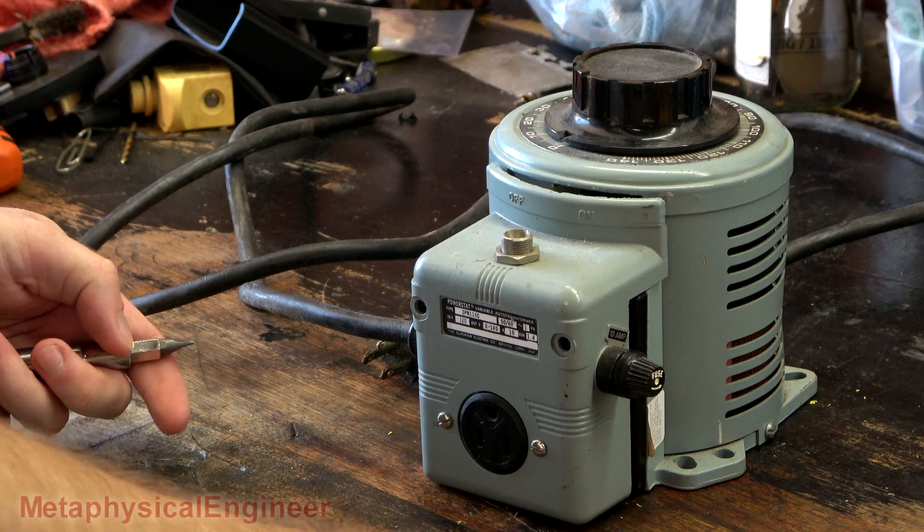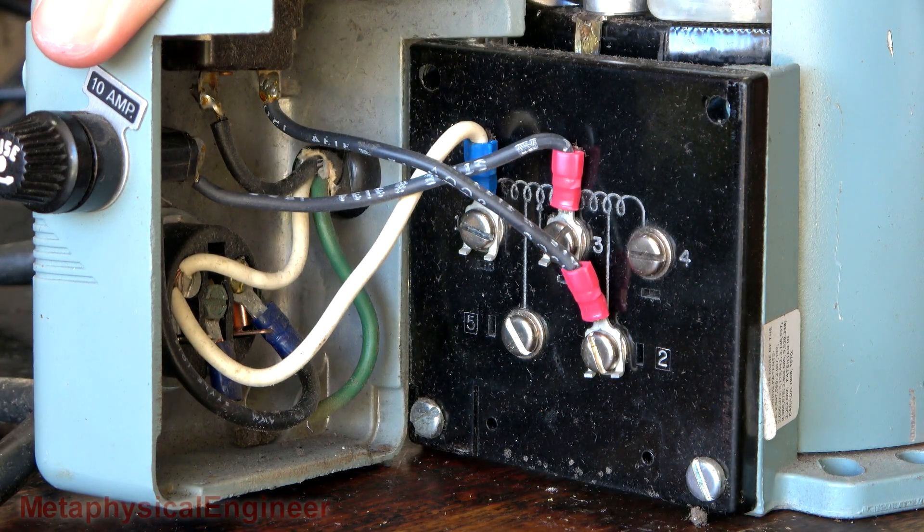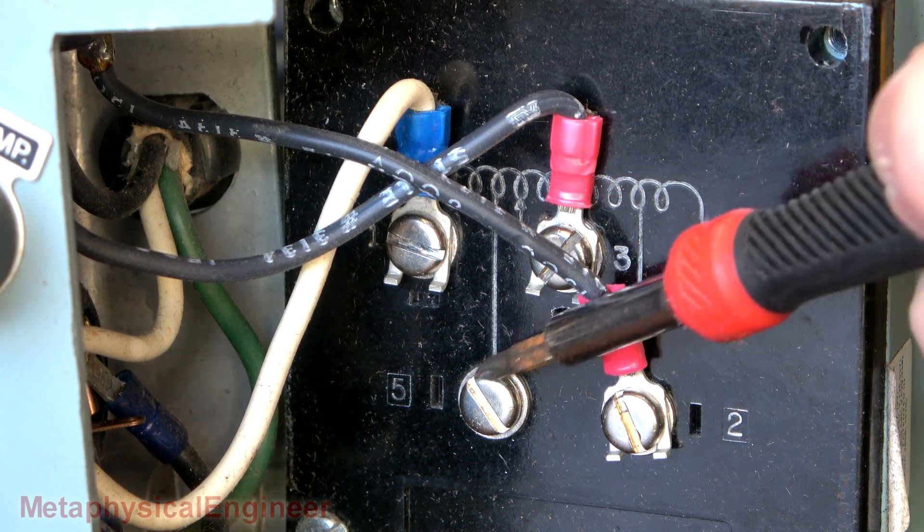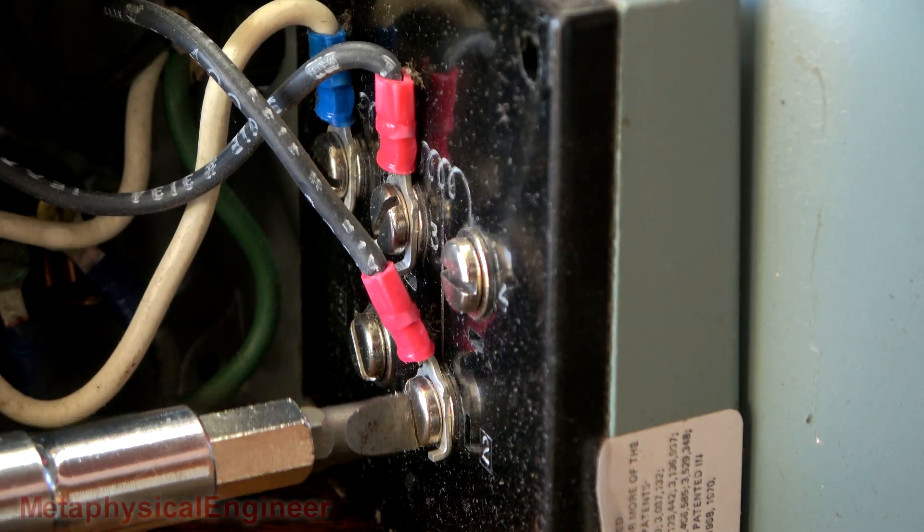One screw, two screws. A little tight on slack, but very well labeled in here. One is neutral, two is line, three is output, four and five are unused extra taps. I'll pull all these loose just so I have some room to work in here.